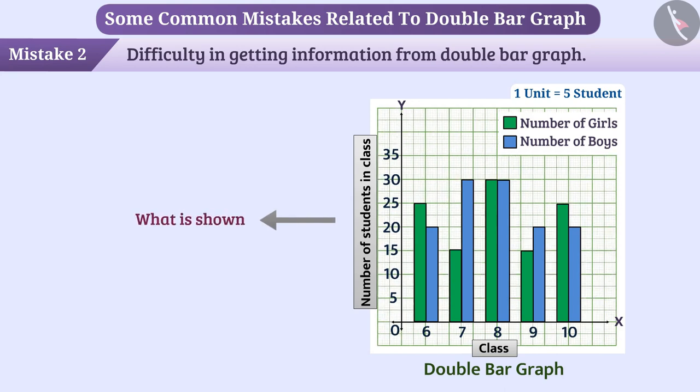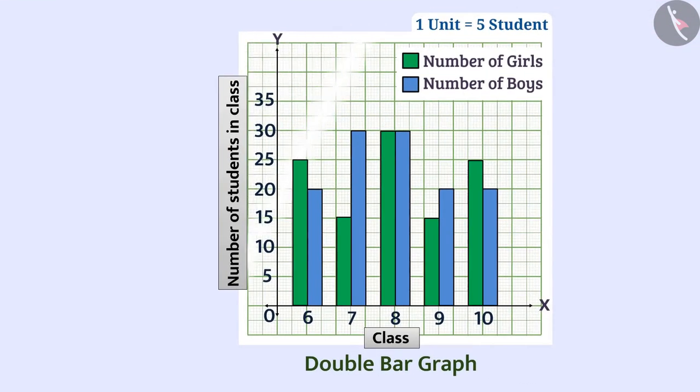To find out what information is shown in a double bar graph, it is necessary to see what is represented on the x-axis and the y-axis as well as to understand what each bar represents in a pair of bars. Here, the number of students is shown on the y-axis and the classes are shown on the x-axis. Here, the green bar represents the number of girls and the blue bar represents the number of boys.